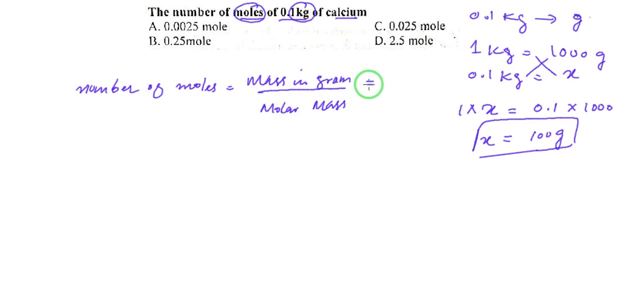So mass in grams is 100 grams, and for calcium atomic mass would be 40, so 100 grams divided by 40 grams per mole. So the gram units cancel out and we would be left with moles.